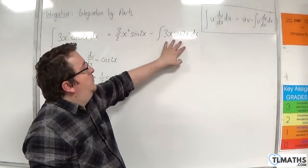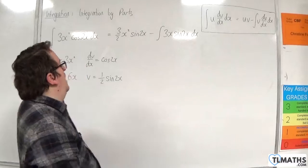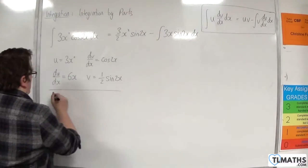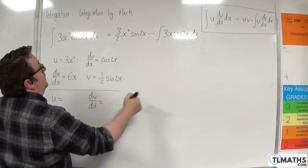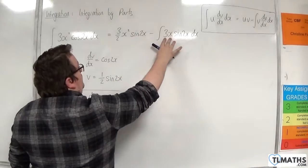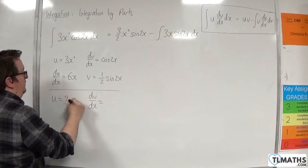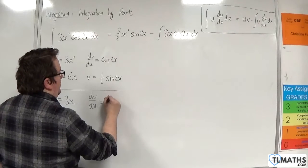Now the integral I've got here, we need to do integration by parts on that as well. So by the LATE rule the 3x should be chosen as u and the dv by dx is sine of 2x.